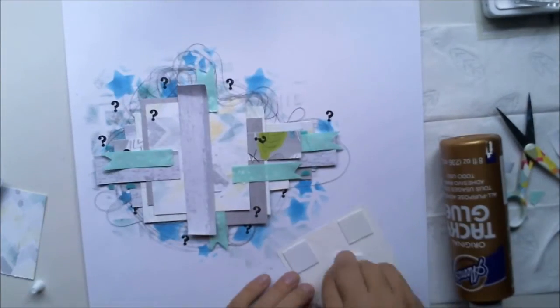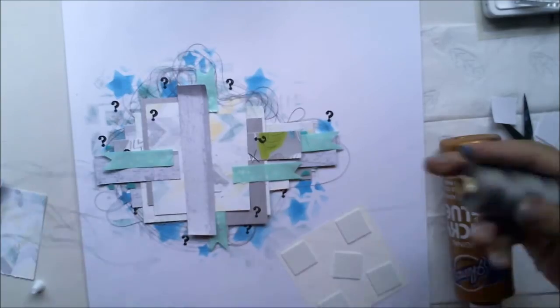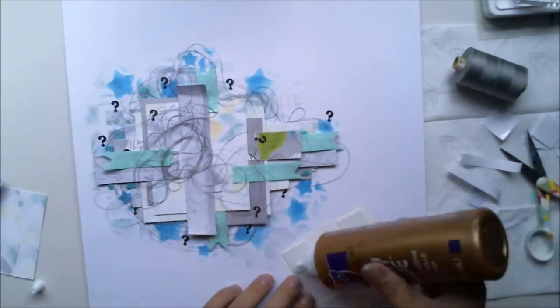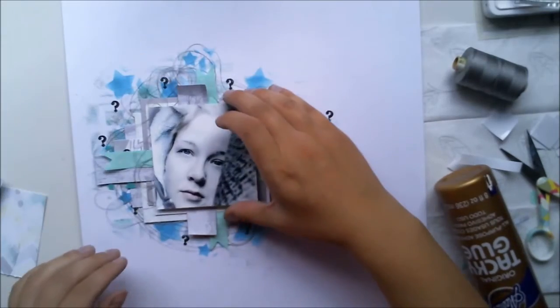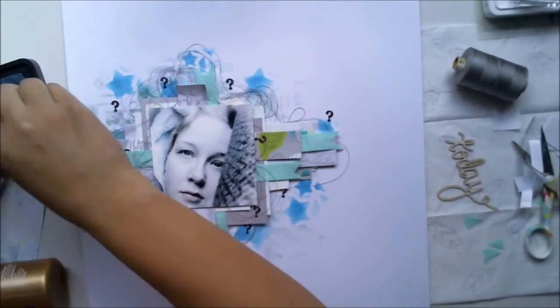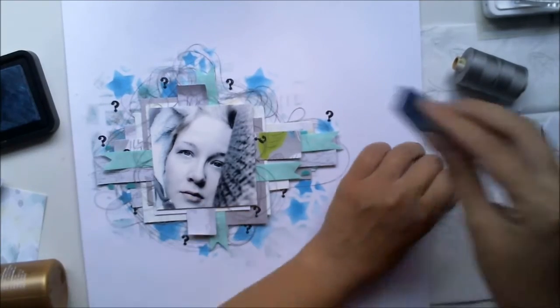After gluing all those washi tapes here and there, I'm adding some swing thread behind the picture and then attaching the picture using 3D foams and glue, like I always do, to make that picture pop out from the layout.